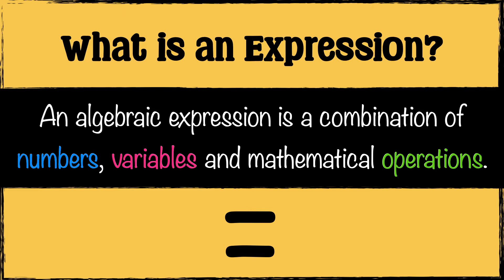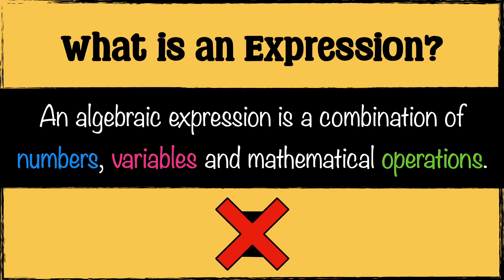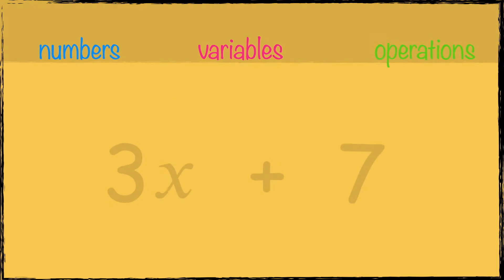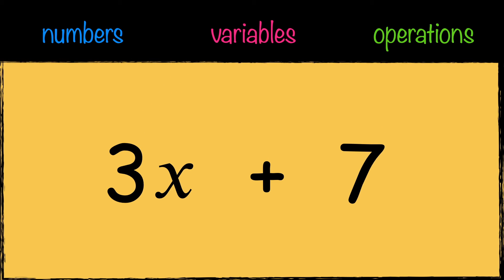equations, expressions do not have equal signs. So let's have a look at the components of an expression. First we have the numbers. In this expression we can see the number three and the number seven. This can be further broken down into coefficient